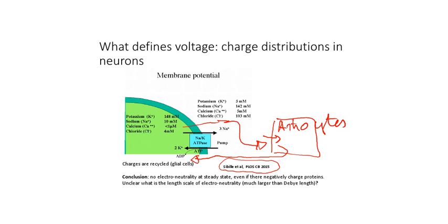These cycles take time and have been described and modeled in a publication in PLoS Computational Biology. The fact that it takes time for these positive charges — especially potassium — to come back shall influence the recovery of the cells. The main conclusion here is that we consider that neuronal cells have no electroneutrality at steady state. Even if there are negatively charged proteins, these proteins, because they may not be moving or may diffuse very slowly, cannot counterbalance the very quick motion of the ions.